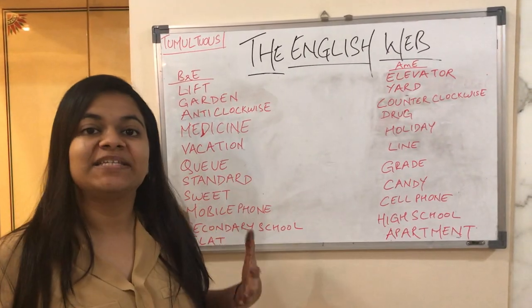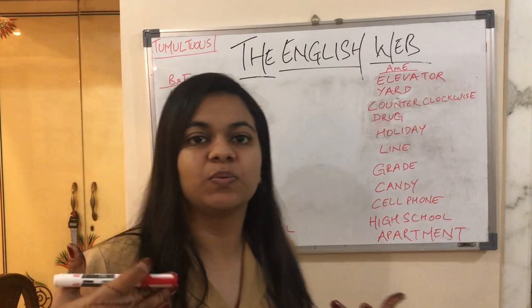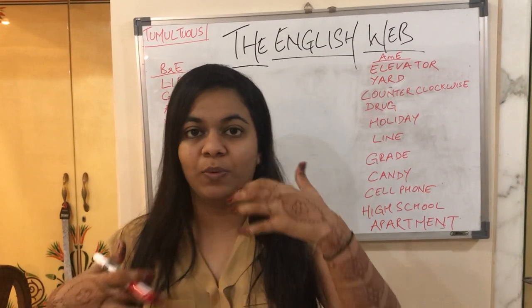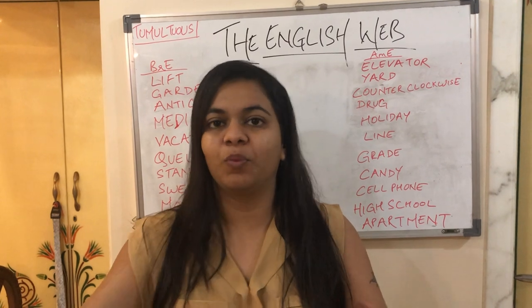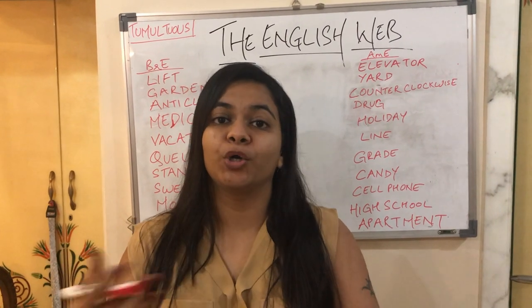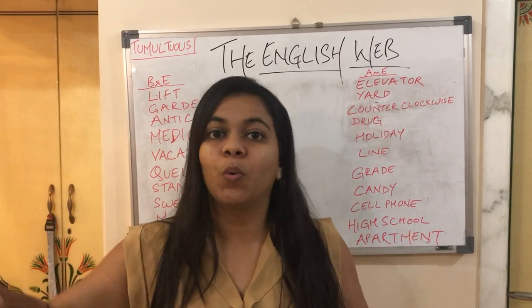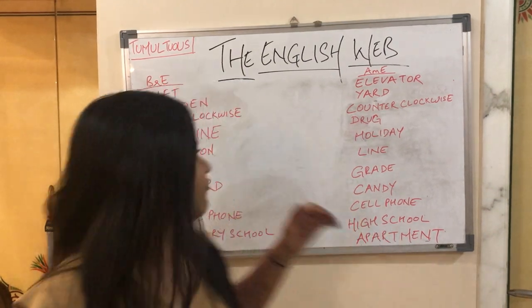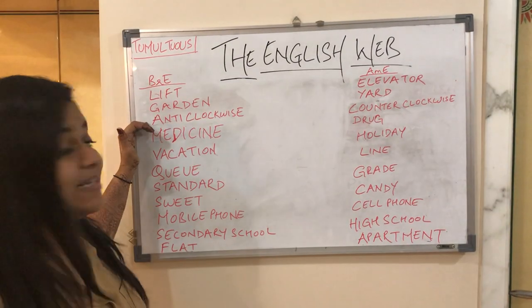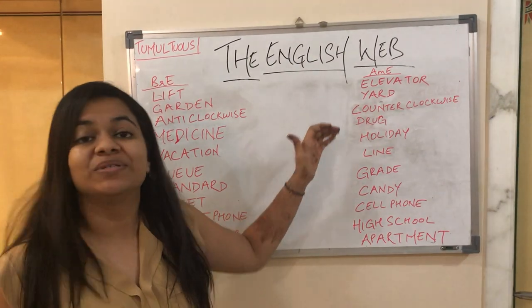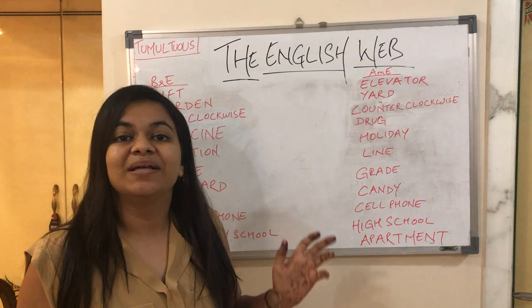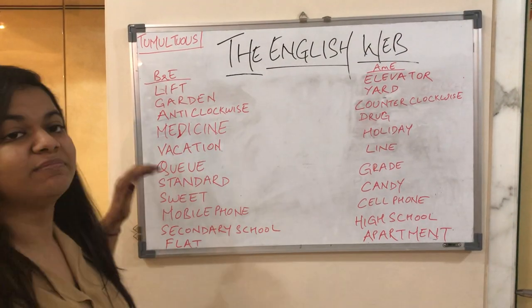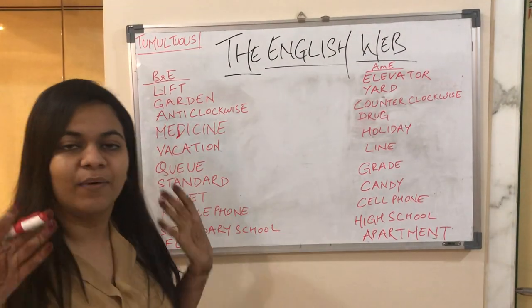The third word is 'anti-clockwise.' We often use this word when playing a game or referring to an order — saying it's clockwise or anti-clockwise. In British English we use 'anti-clockwise,' while in American English we use 'counterclockwise.'